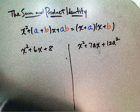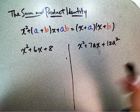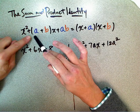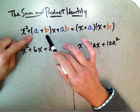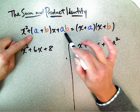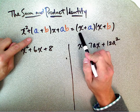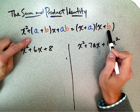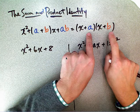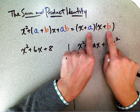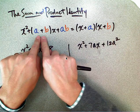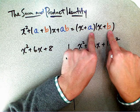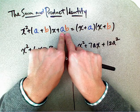The sum and product identity: x squared plus the quantity of a plus b times x plus ab equals the quantity of x plus a times the quantity of x plus b. In other words, if you add these two numbers you should get the coefficient of x, and if you multiply these two numbers you should get the constant.